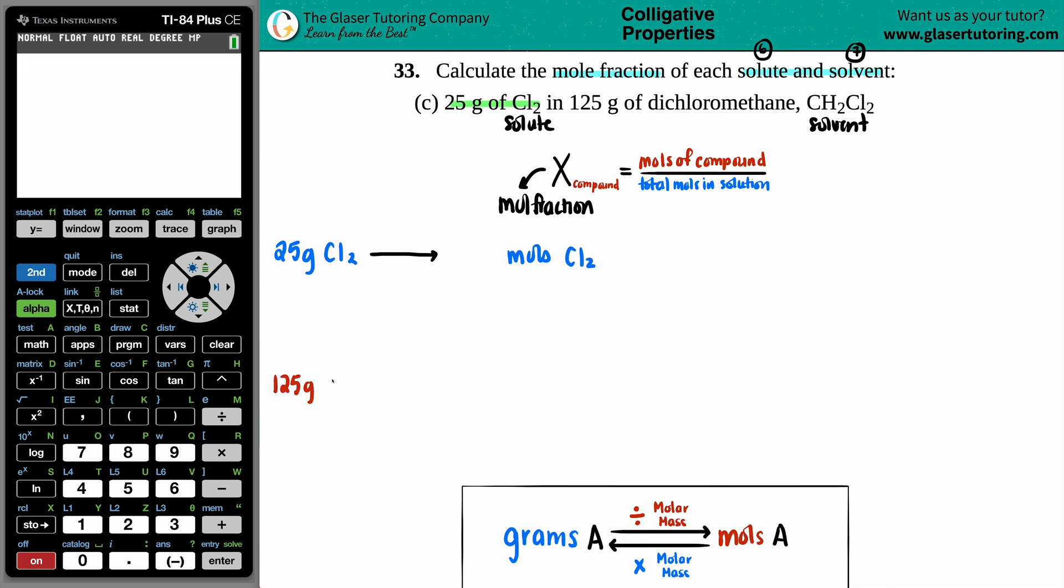And then I got to do the same thing for the dichloromethane. They gave me 125 grams of CH2Cl2. Let's convert that into moles of CH2Cl2. So grams to moles. If you're going from grams of one substance to moles of the same substance, you always just divide by the molar mass. So I have to look on the periodic table for what the molar mass of Cl2 is. There's two chlorines. Each chlorine is 35.45. So I just do two times 35.45. And I get 70.9. So I just divide by 70.9. So my 25 grams that I have divided by the 70.9. There is my total number of moles, 0.3526.